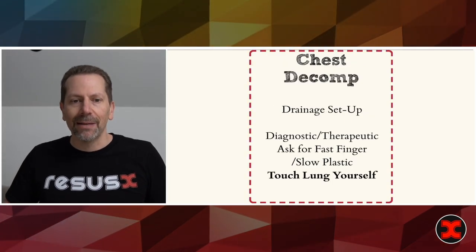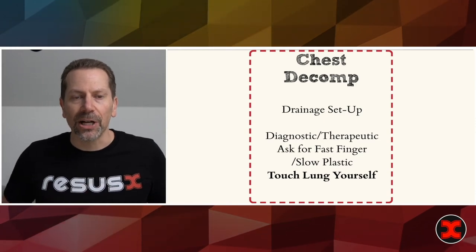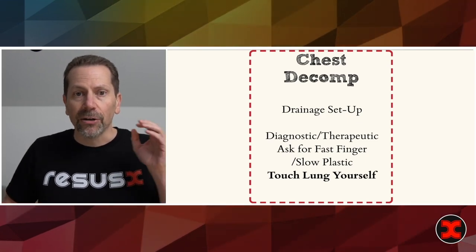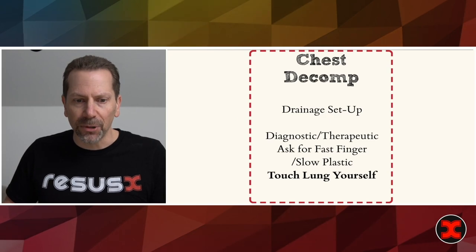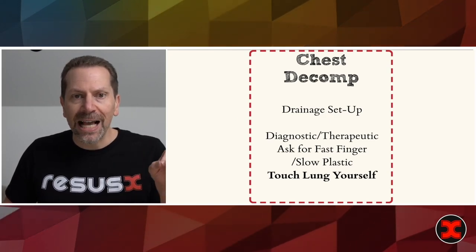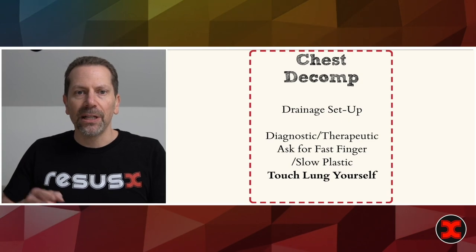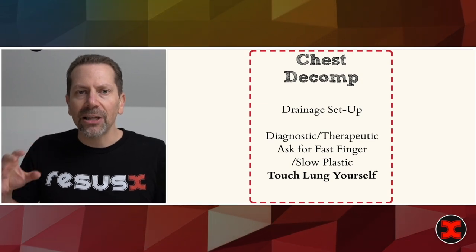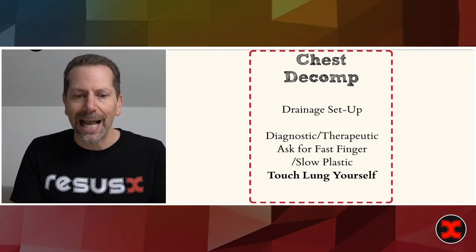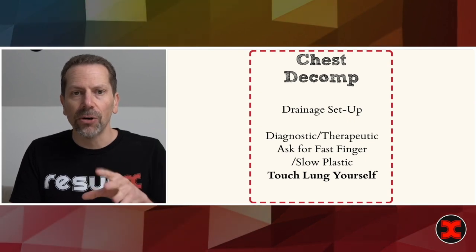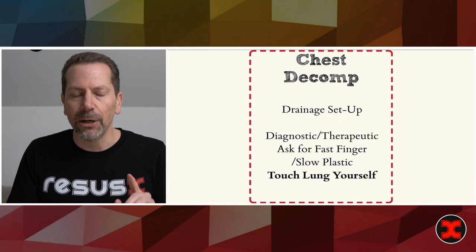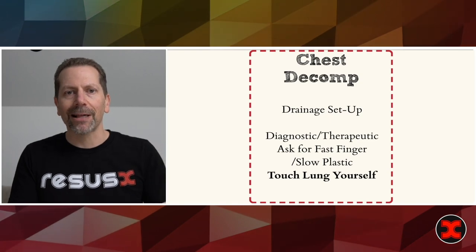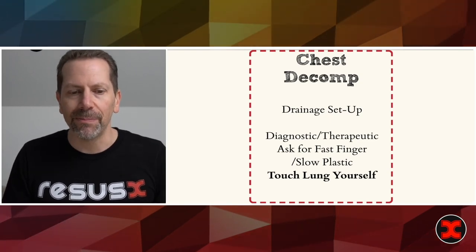If the patient needs chest decompression — because they're about to crash or you've confirmed injury — ask your podium nurse for your drainage setup and pleurevac. The approach is fast finger, slow plastic: do a finger thoracostomy — your slice with a hemostat, then a finger — which should take less than 20 seconds, and then take all the time needed to place the chest tube. As trauma team leader, break away, put on a sterile glove, and feel the lung yourself to rule out that thorax, unless you really trust the people performing the procedure.